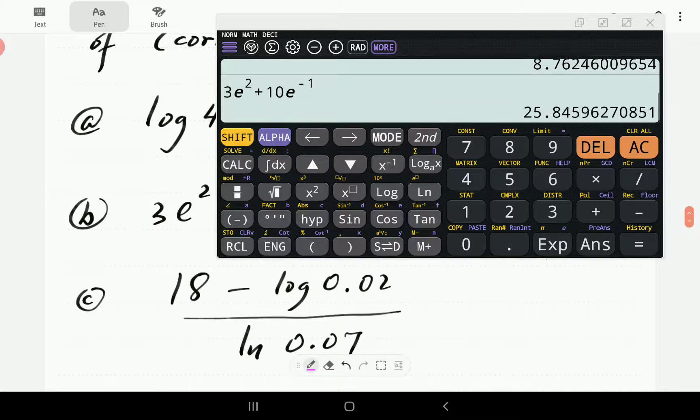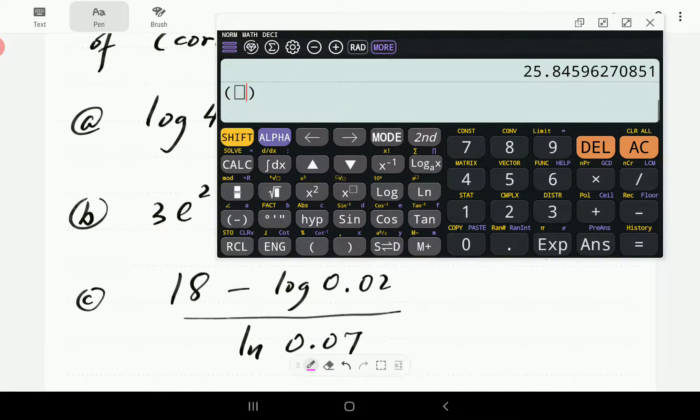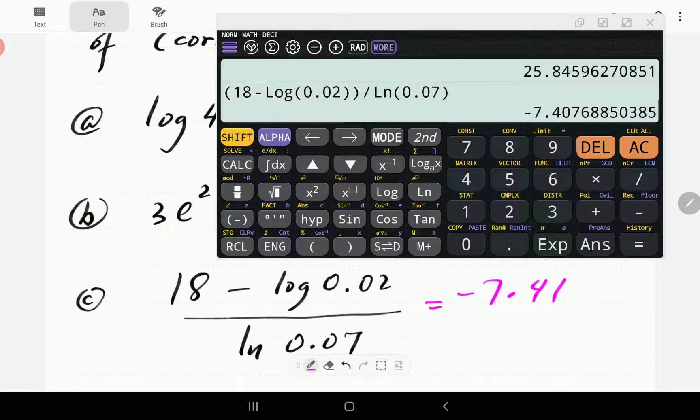For this one, since it's divided, it's advisable to use brackets. Open brackets 18 minus the common log of 0.02, and then this is all divided by natural log of 0.07. And this is equal to negative 7.41.